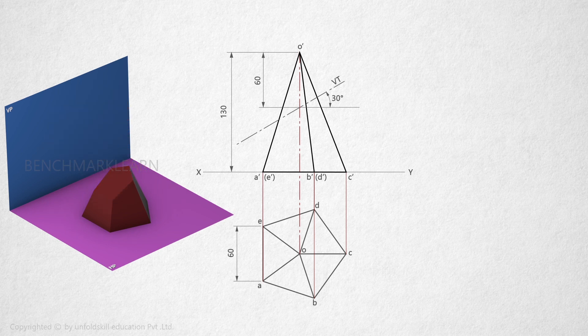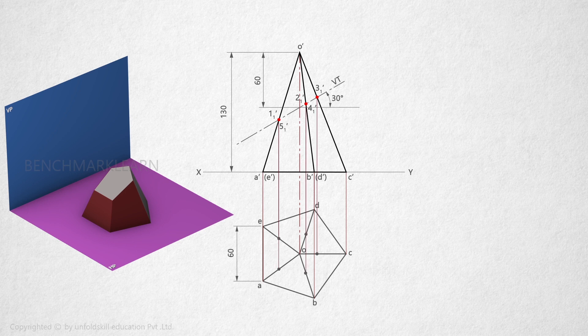Line A-dash O-dash is cut at point 1; B-dash O-dash is cut at 2; C-dash O-dash is cut at 3; D-dash O-dash is cut at 4; E-dash O-dash is cut at 5. Project these points to get the top view of the section. Name the respective points.